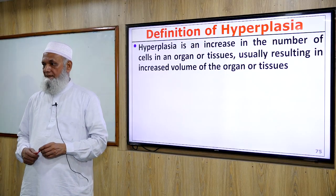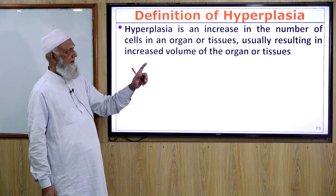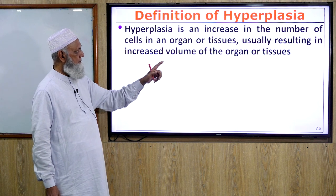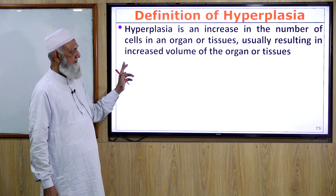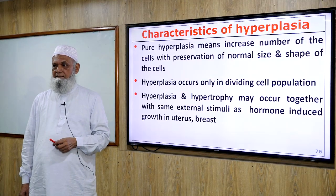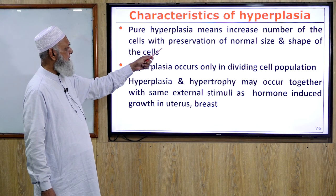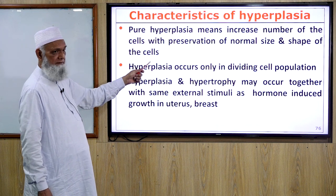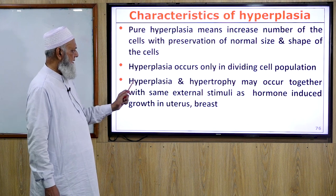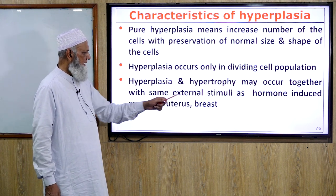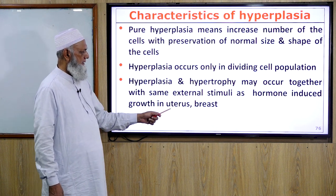Next: hyperplasia. Hyperplasia is an increase in the number of cells in an organ or tissue, usually resulting in increased volume of the organ or tissue. Characteristics: pure hyperplasia means increased number of cells with preservation of normal size and shape. Hyperplasia occurs only in dividing cell populations. Hyperplasia and hypertrophy may occur together with the same external stimuli, such as hormone-induced growth in the uterus and breast.